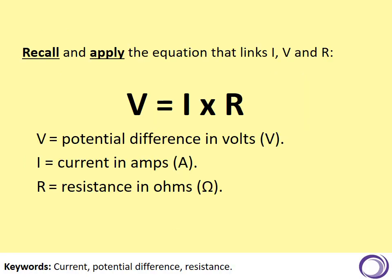So we should know, we should be able to recall and apply this equation when we do our GCSEs exams. So V equals IR, voltage, which is potential difference, equals current multiplied by resistance. Current is measured in amps and resistance is measured in ohms.